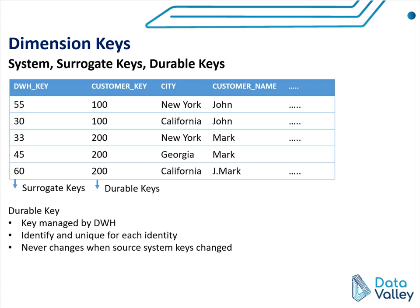For example, here we have a table for the customer dimension. We have a data warehouse key, which is a surrogate key — an incremental integer key — and we have a customer key, which is a durable key for a customer. So whenever customer details change, the durable key will not change. As you can see here, for customer key 100, the city has changed; however, the customer key did not change.